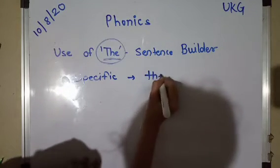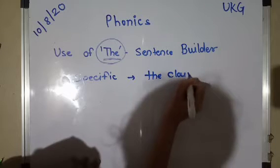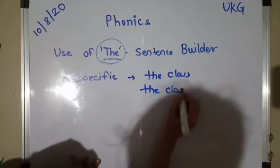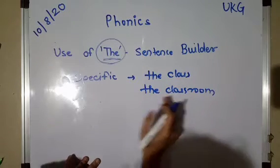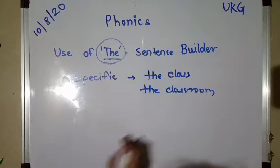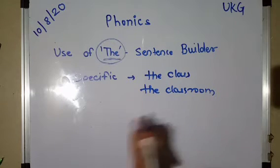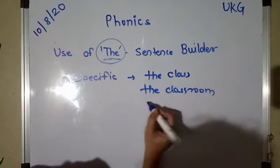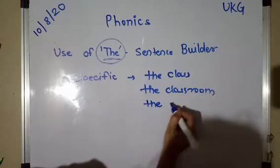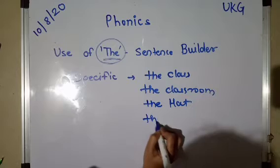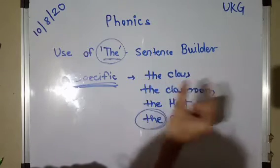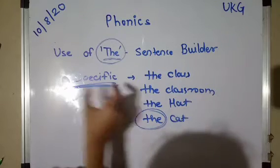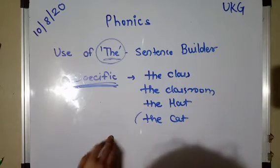For example: the class, the classroom. If you want to talk about the classroom, then you will say 'the classroom', 'the class', 'the hat', 'the cat'. When we use 'the', it is when we want to talk about a specific thing.